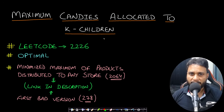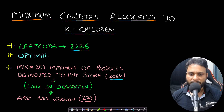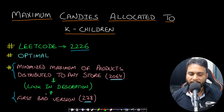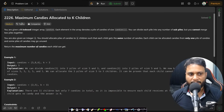Welcome back to Tech Doors. In this video we will look at the Maximum Candies Allocated to K Children problem, which is LeetCode number 2226. Good problems to solve after this are LeetCode 2064 (Minimized Maximum of Products Distributed to Any Store) and also First Bad Version (278). Both videos are already made and the links will be shared in the description below.